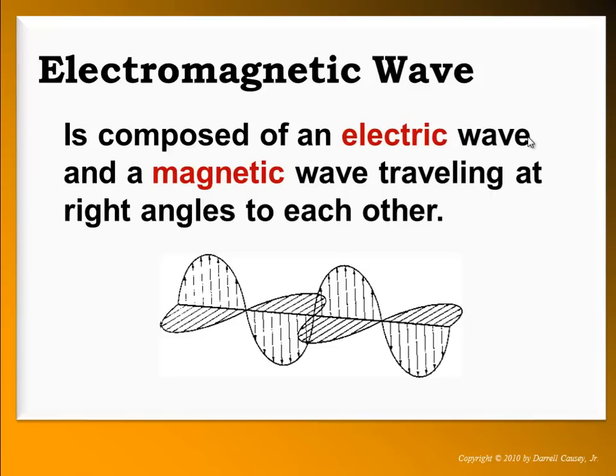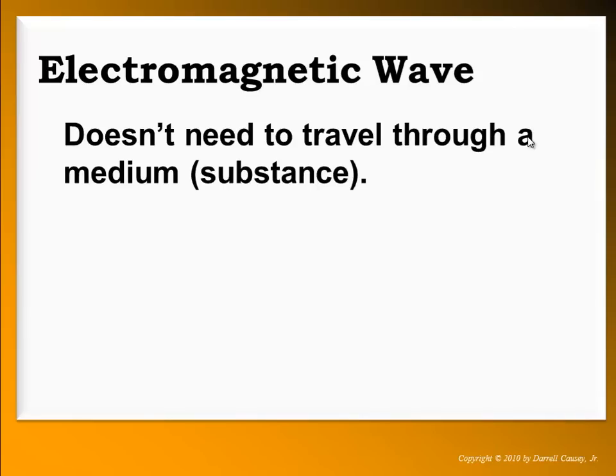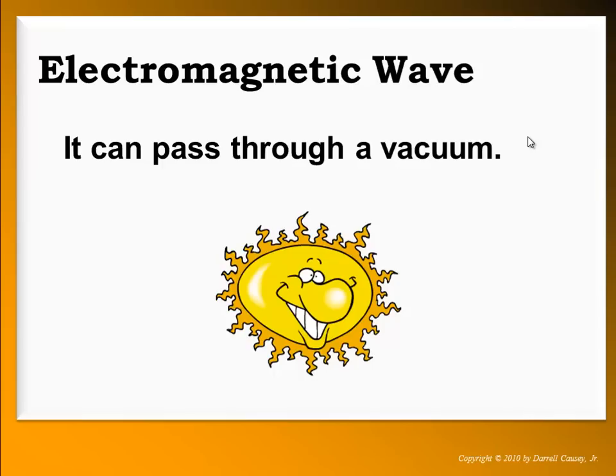An electromagnetic wave does not need any medium to travel through. It doesn't need a substance. Sound waves need something to pass through, a liquid or a gas. Sound travels through our atmosphere, which is a gas, through water, and through solid objects. Seismic waves and ocean waves need a substance to go through. But electromagnetic waves, EMR, electromagnetic radiation, doesn't require any medium or substance. It can travel through a vacuum. Our sunlight travels from the sun to the earth through space, and space is a vacuum.